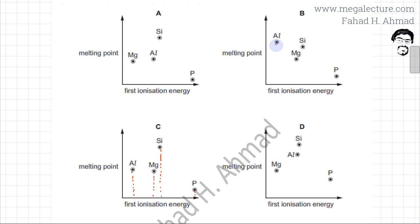This option is also going to be correct. It would be Al, Mg, then Si would have a higher ionization energy, followed by phosphorus as having the highest ionization energy. So the horizontal axis in both cases is correct. The first ionization energy is plotted correctly.